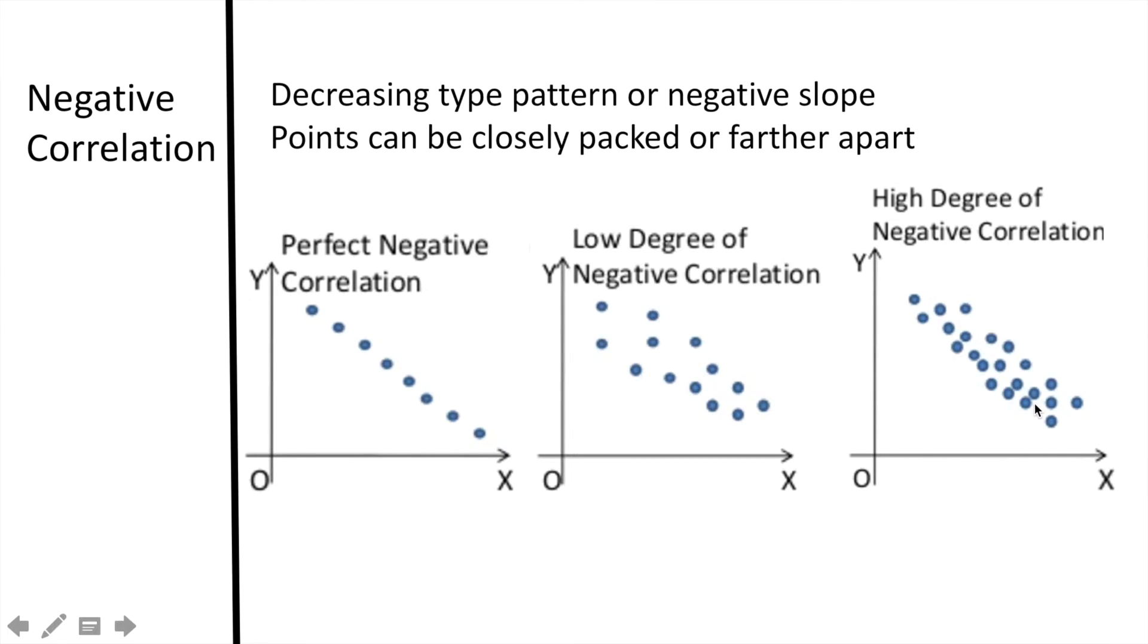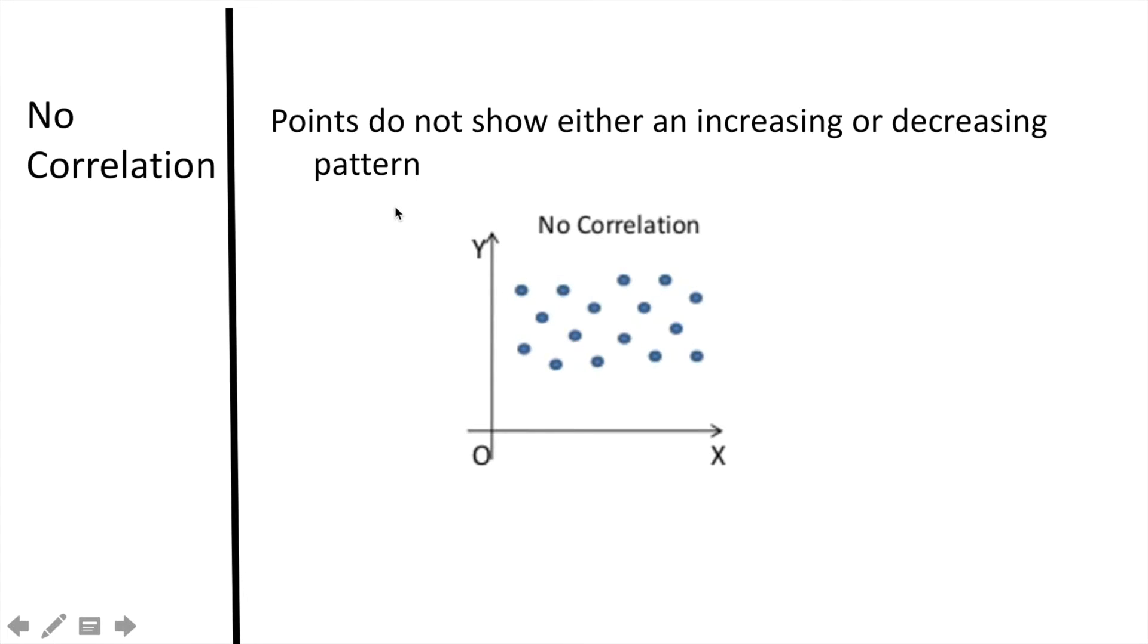If the points do not show either an increasing or decreasing pattern, as in this graph here, we can then state that there is no correlation, and this is a third kind of graph that can be obtained using a scatterplot graph.